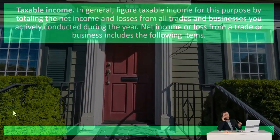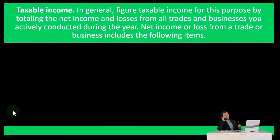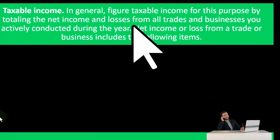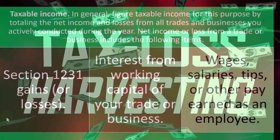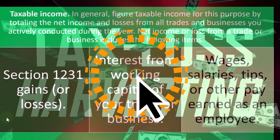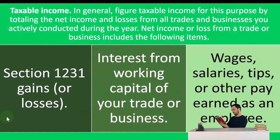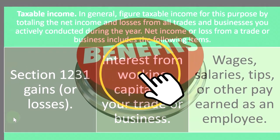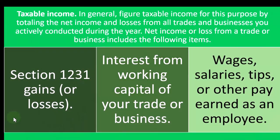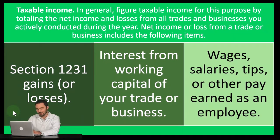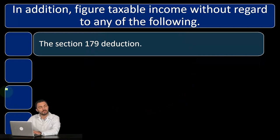Taxable income — what is it? In general, figure taxable income for this purpose by totaling the net income and losses from all trades and businesses you actively conducted during the year. Net income or loss from a trade or business includes Section 1231 gains or losses, interest from working capital of your trade or business, and wages, salaries, tips, or other pay earned as an employee. Remember, as a general rule, the IRS is skeptical of losses — the IRS wants to be your silent partner, taking a piece of the income but not taking on the risk of losses. So losses could be a benefit tax-wise, but there may be limitations if it cuts into a loss situation.